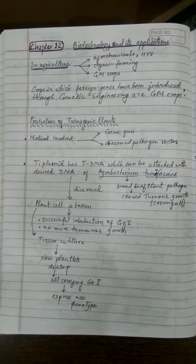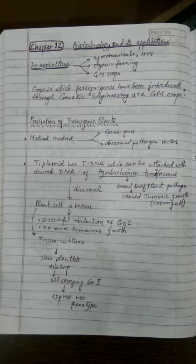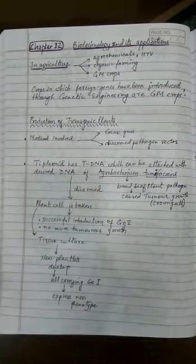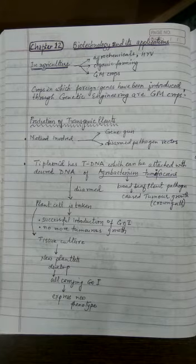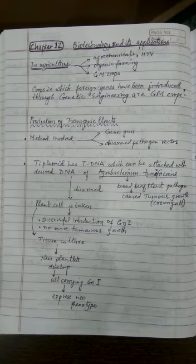Production of transgenic plants involves two methods. The first is the gene gun, which is a direct or vectorless method. The second is a vector-aided method using a disarmed pathogen vector — specifically Agrobacterium tumefaciens. In this method, the Ti plasmid of Agrobacterium is modified so it attacks the plant cell but does not cause tumorous growth. The gene of interest is ligated into the plasmid, the plant cell receives it, becomes a transgenic cell, and through tissue culture is developed into plantlets that express the new phenotype.